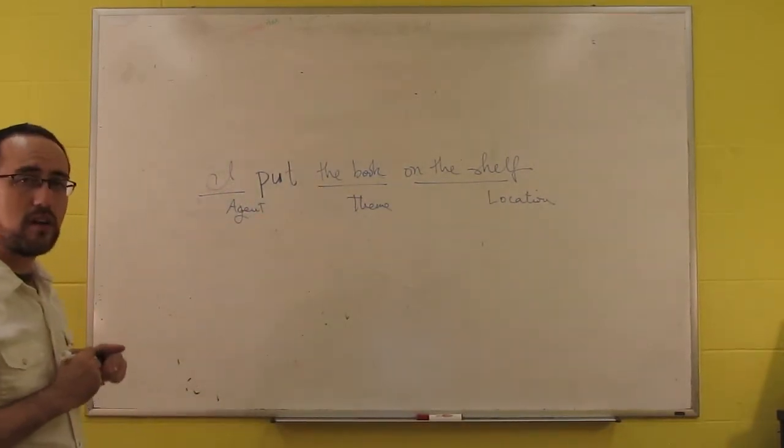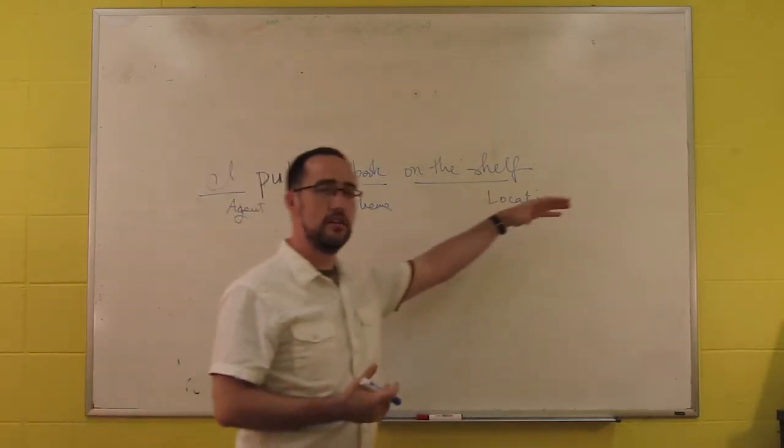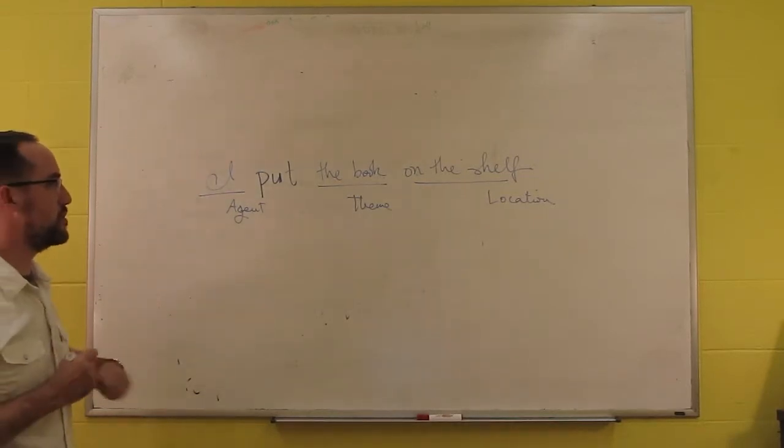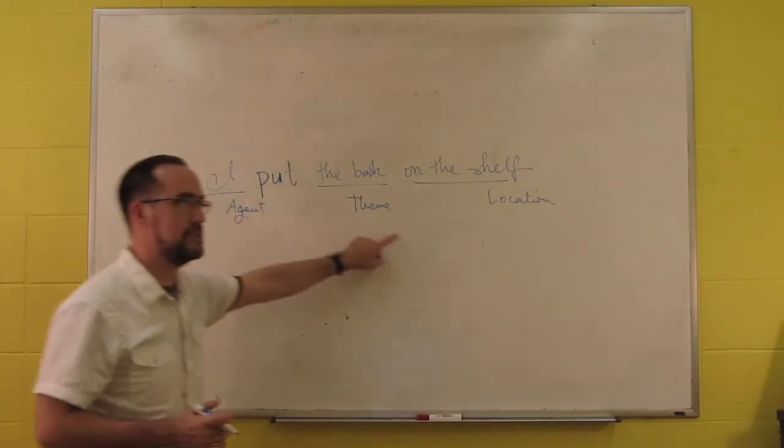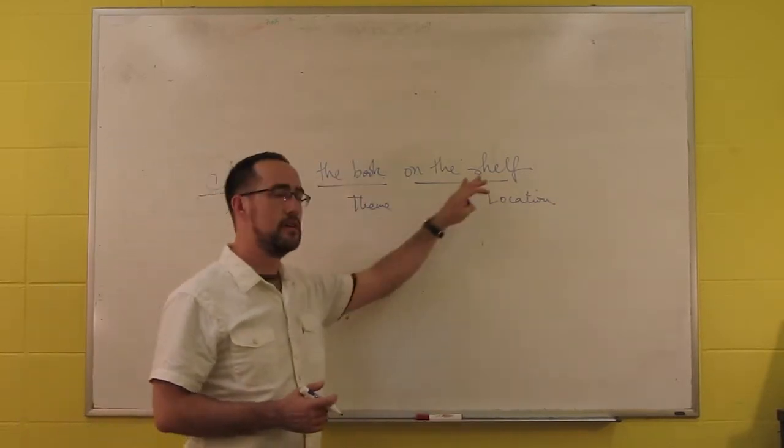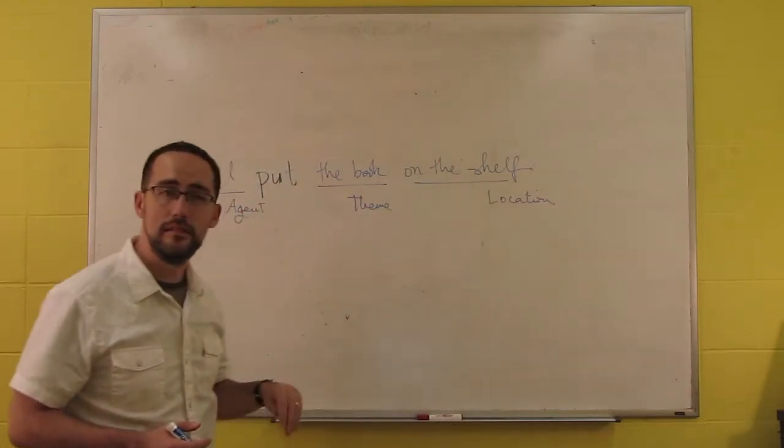And in English, you have to express all three of them. You can add adjuncts to express, say, an instrument or something like that, but these three have to be there, these are the arguments. But they have these semantic qualities. The subject is an agent, the object is a theme, and this oblique is a location.